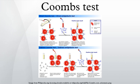In the laboratory method for the direct Coombs test, the patient's red blood cells are washed and then centrifuged with anti-human globulin. If immunoglobulin or complement factors have been fixed onto the RBC surface in vivo, the anti-human globulin will agglutinate the RBCs and the direct Coombs test will be positive.